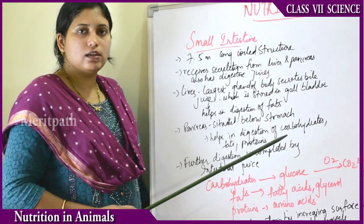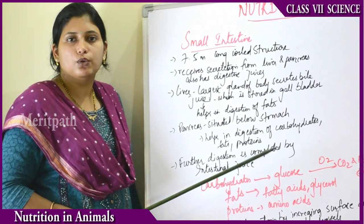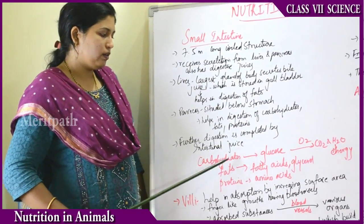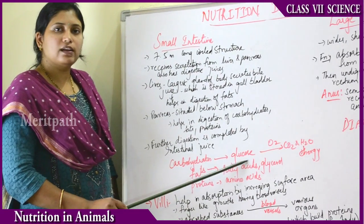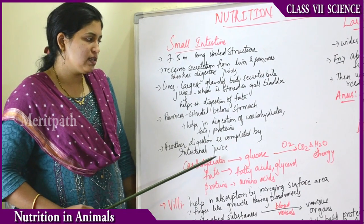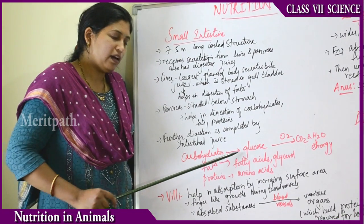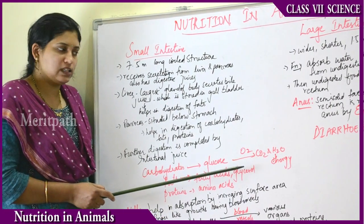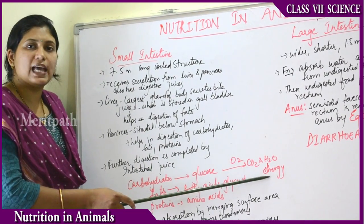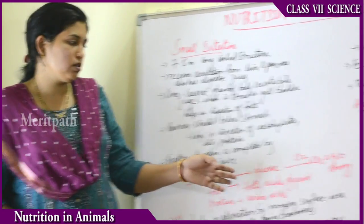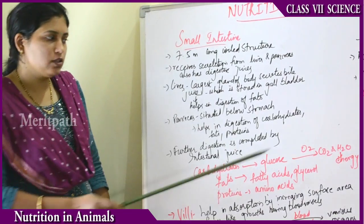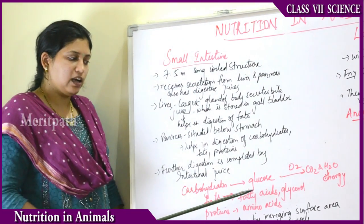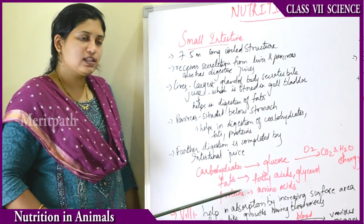An imbalance in the secretion of insulin results in a disease called diabetes or sugar. Further digestion is completed by these digestive juices. The carbohydrates are converted into sugary substances called glucose. This glucose, in the presence of oxygen in the cells, gets further converted into carbon dioxide and water, releasing energy. Digested fats are converted into fatty acids and glycerol, and digested proteins are converted into amino acids.